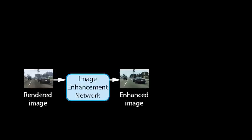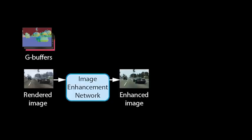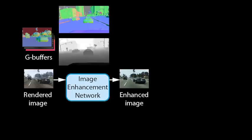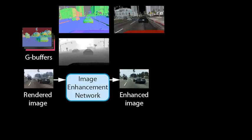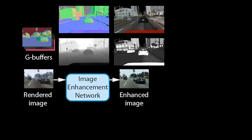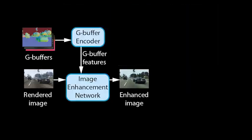Our method takes a rendered image from the game and passes it through an image enhancement network to produce an enhanced image. We further extract a set of rendering buffers, called G-buffers, produced by the game engine. G-buffers contain geometric information such as surface normals or distance to the camera, material information such as albedo or glossiness, and may also contain information about the lighting in a scene. We pass the buffers through a G-buffer encoder network to produce feature tensors at multiple scales, which encode the information about the rendered scene.